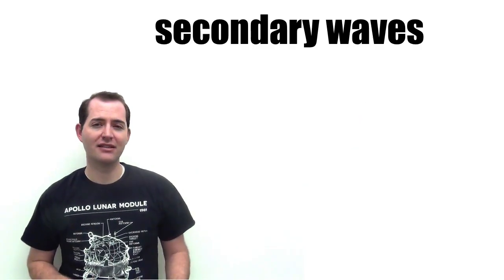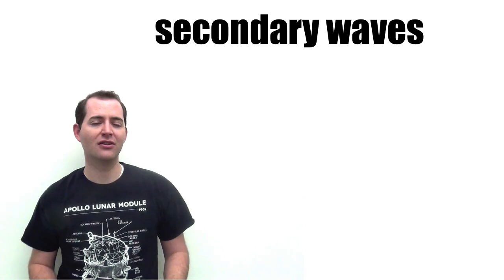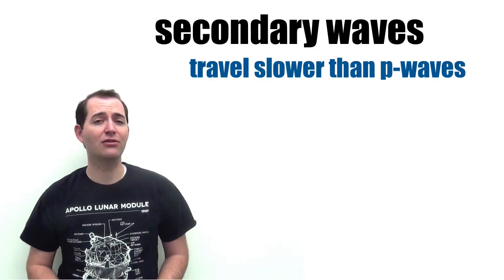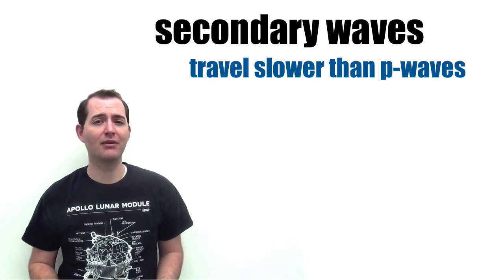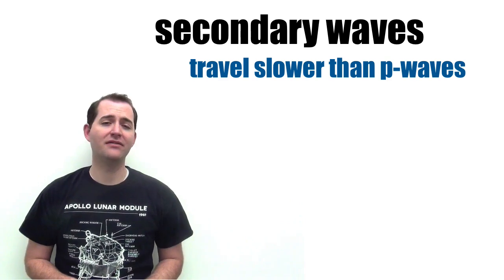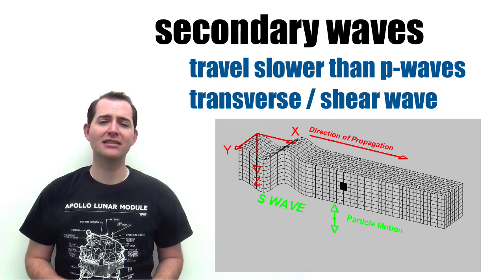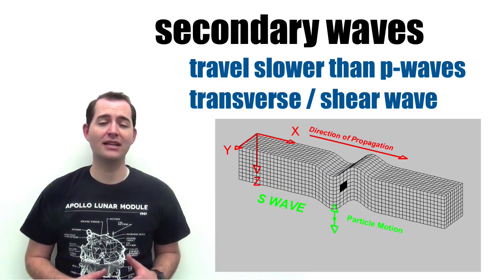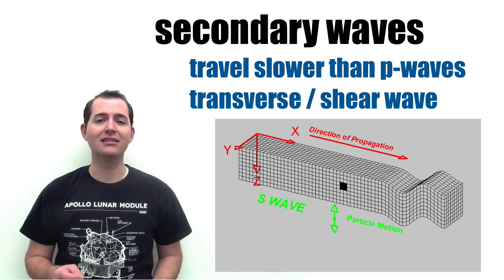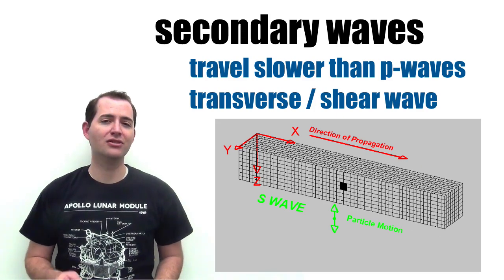S waves, or secondary waves, are the second waves that leave an earthquake, and they travel much slower than primary waves. S waves are classified as a transverse wave. This means that the displacement of the medium, or in this case the body of the Earth, is perpendicular to the motion of the wave.